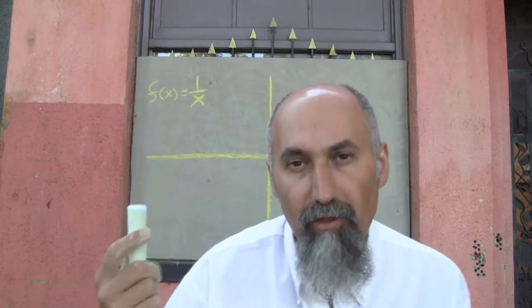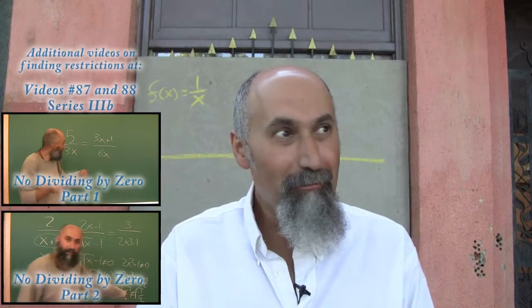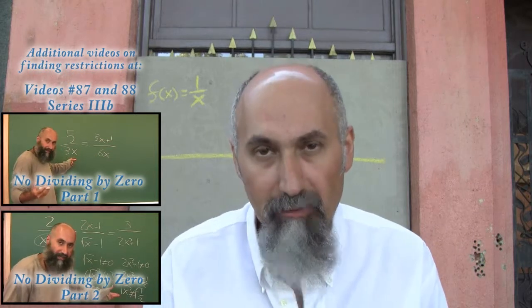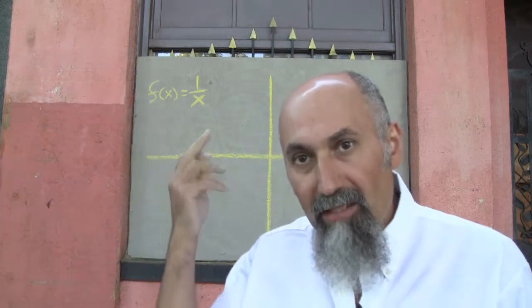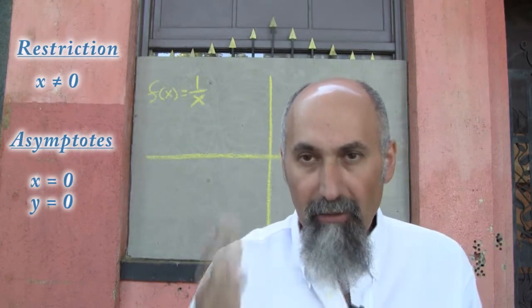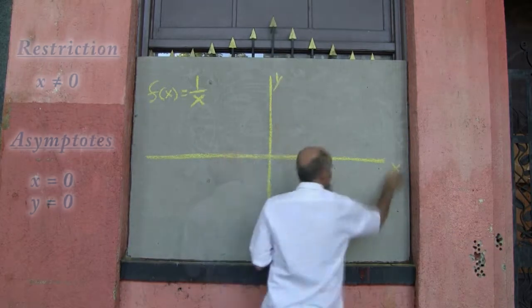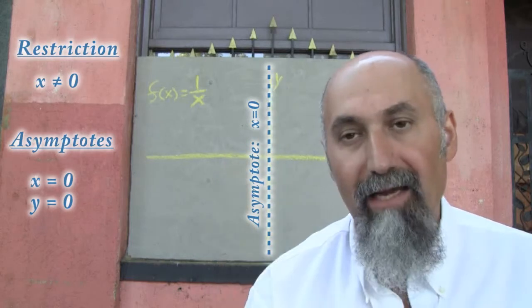Whenever we're graphing a function, we have to write down our restrictions — where we can't go, the impasses. The impasse in mathematics is that we can't divide by 0, because we can't comprehend what happens. That means x would have to equal 0 here, and x equaling 0 is our restriction. It becomes our asymptote — an impasse. And x equals 0 is basically our y-axis, so this line is an impasse; we can't have x equaling 0.